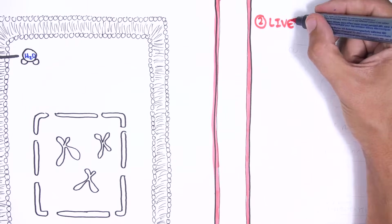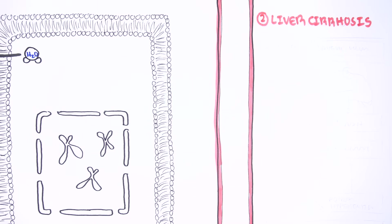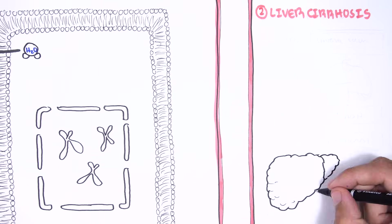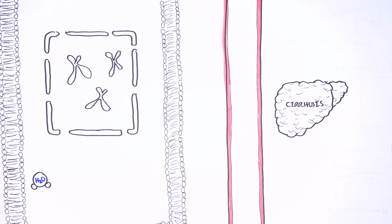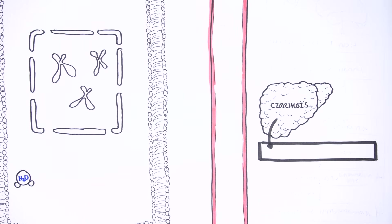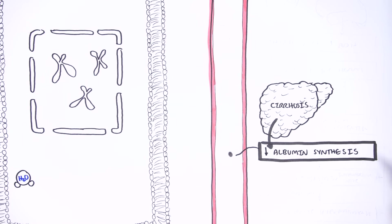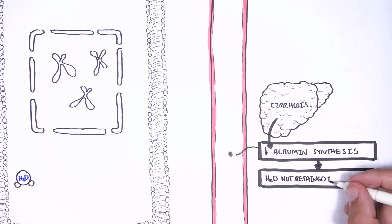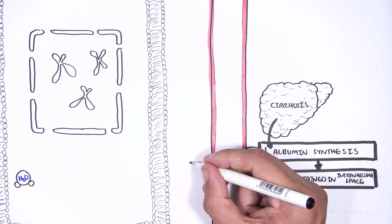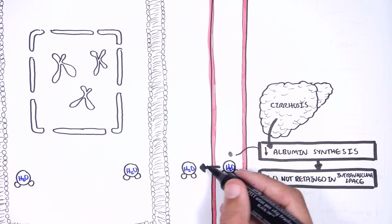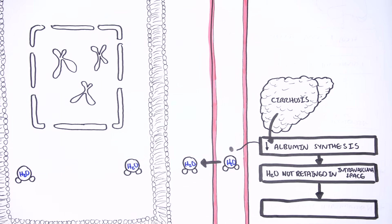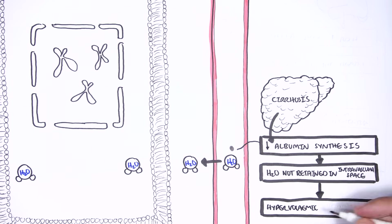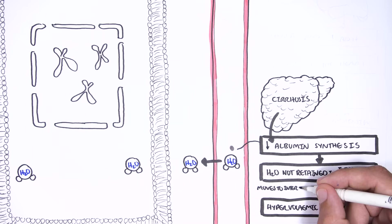Another cause of hypervolemic hyponatremia is liver cirrhosis. In liver cirrhosis, there is reduced albumin synthesis. Normally, albumin — a protein — retains water in the intravascular space. With low albumin, water does not stay in the intravascular space and rather moves into the interstitial space, resulting in edema. Sodium also shifts to the interstitial space, resulting in hyponatremia.